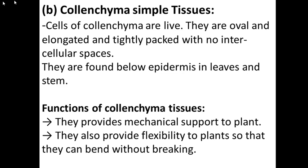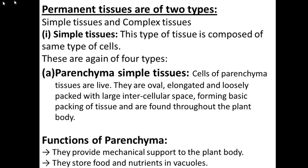Next is colenchyma simple tissues. These are found in the petioles, in the leaves, and in young stems — when the plant is still growing. The cells of colenchyma are also living cells, like parenchyma cells. Their structure is also oval and elongated, but the key difference is in the intercellular spacing.